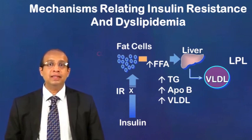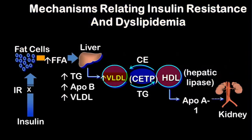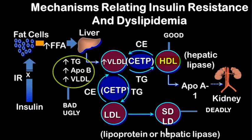With an increased VLDL output from the liver, there is an exchange which happens via the cholesterol ester transfer protein to the HDL. The triglycerides from the VLDL go to the HDL and the cholesterol esters from the HDL go to the VLDL. As a result, the hepatic lipase gets activated, and with increased activation of the hepatic lipase, the ApoA1 component of the HDL gets dislodged and is excreted via the kidneys. This is why in patients with diabetes you find increased triglycerides and decreased HDL.